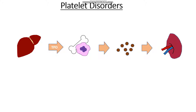If we backtrack and see where things can go wrong, we can see that if we don't have enough thrombopoietin we might not have enough platelets. So what could cause a reduction in thrombopoietin levels? Any damage or insult to the liver could cause an issue, including things like liver cirrhosis where we have a fatty dysfunctional liver, or excessive alcohol intake which might lead to liver cirrhosis.